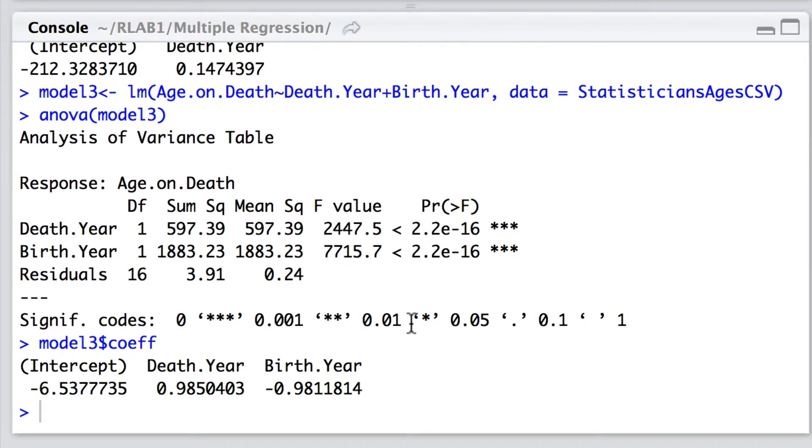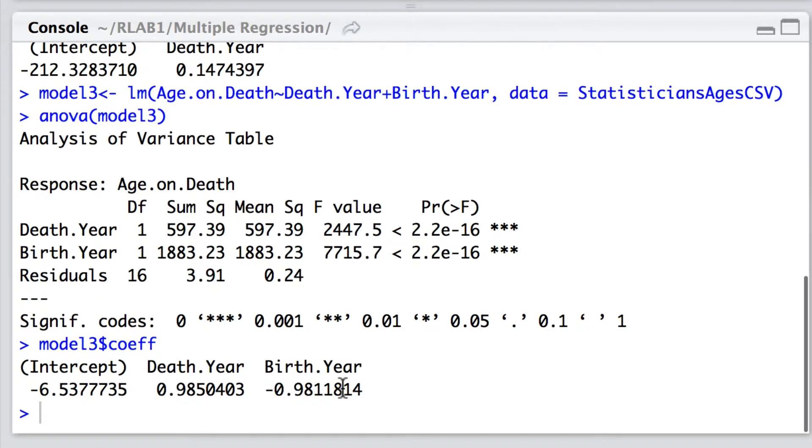Let's have a look at the coefficients here. And here we see something that we were sort of expecting already. The coefficient for death year is approximately 1 and the coefficient for birth year is approximately minus 1. And we'll note that the intercept is something about 6 but remember these values here are in their thousands so this intercept really won't have very much effect at all.